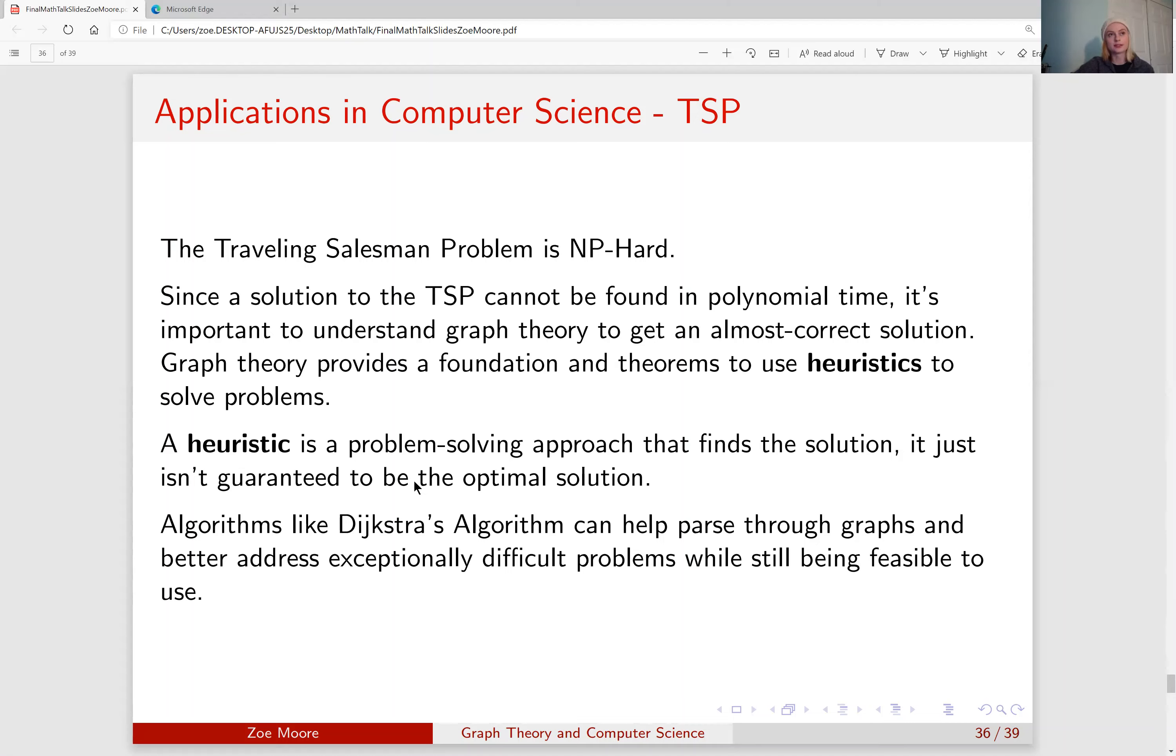This means that some problems such as the traveling salesman problem, optimal solutions cannot be immediately found. If we checked every possible solution it could take lifetimes to get close to solving a problem. And heuristics provide a way to get a solution that might be 95% of the way to being completely optimal.